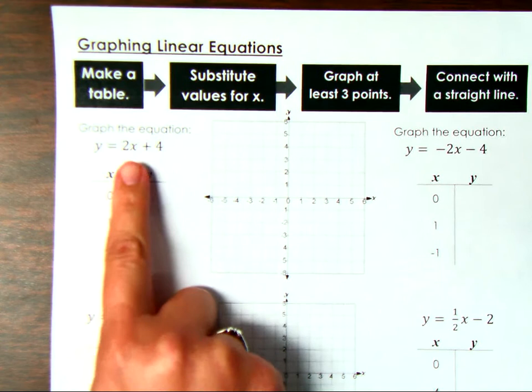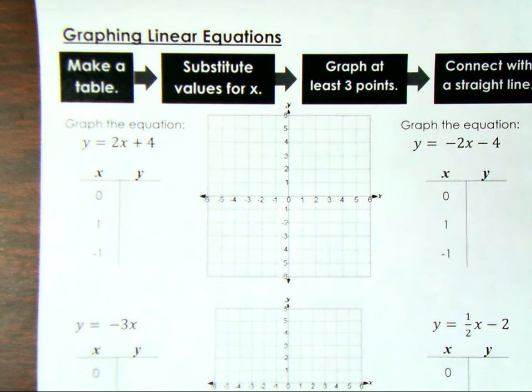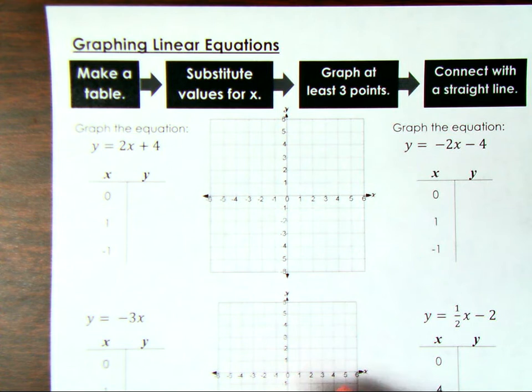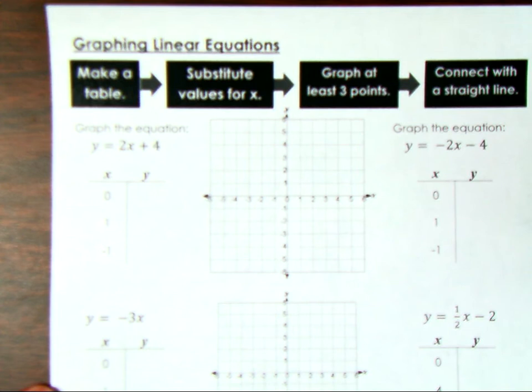Today we are going to look at how, when given an equation, we can make a table and then graph it. We've already been looking at constant rate of change — the change in y over the change in x — and how we can relate that to a table and a graph. But now we're actually going to practice graphing it.